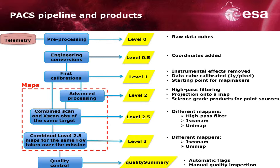If we have several observations of the same field of view, we can combine these products by creating Level 3 maps. For this level, we have just JSCANAM and Unimap maps. Finally, the observational context also has a quality summary where the quality of the observation is reported by means of both an automatic procedure for checking issues and a manual visual inspection of the data.